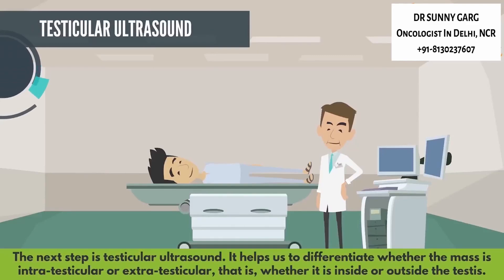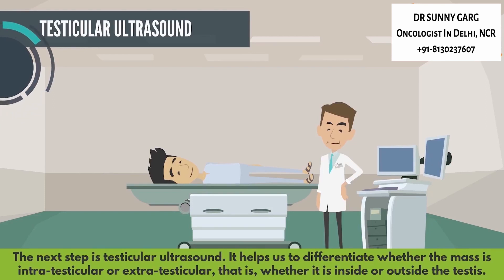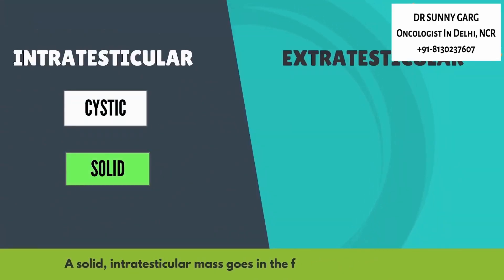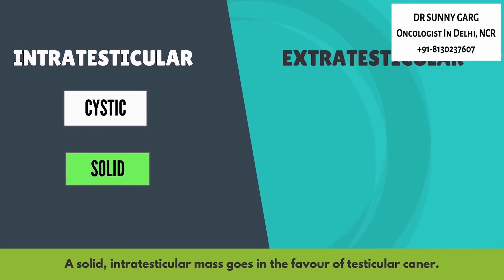The next step is testicular ultrasound. It helps us to differentiate whether the mass is intratesticular or extratesticular — that is, whether it is inside or outside the testes. Then we have to see whether it is solid or cystic. A solid intratesticular mass goes in favor of testicular cancer.